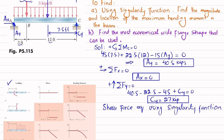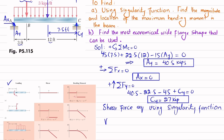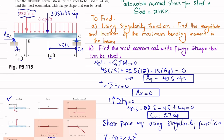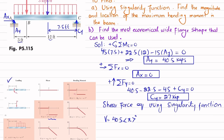Writing the shear force equation using singularity functions, starting from the left side: we have vertical reaction Ay. For a point load acting upward, the shear force term is +Ay × ⟨x − a⟩^0. With a = 0 and Ay = 40.5, the first term is 40.5⟨x − 0⟩^0. Moving along, we have the 22.5 kip downward point load.